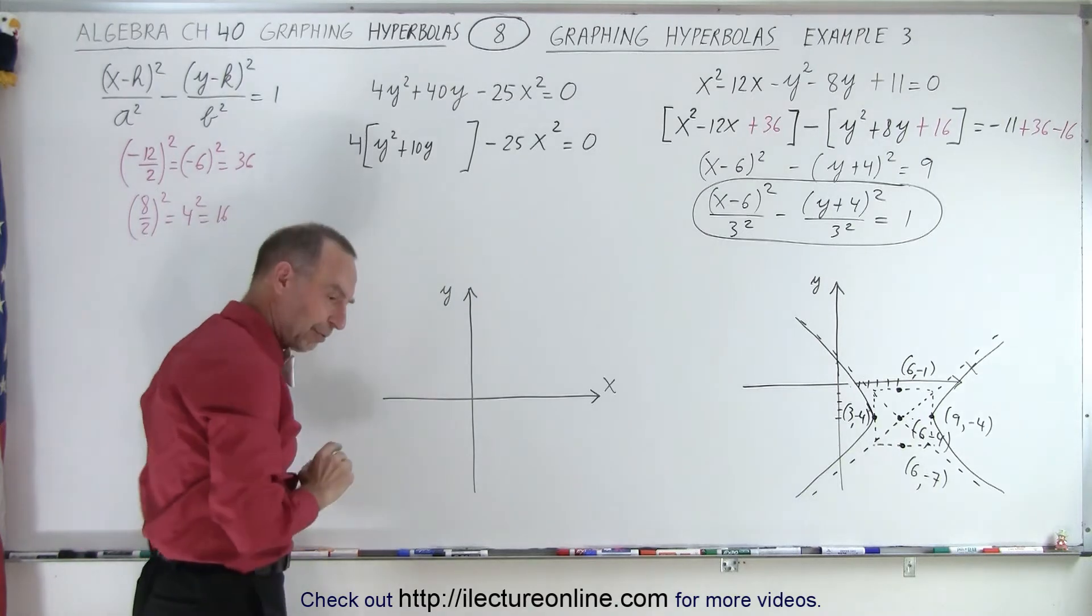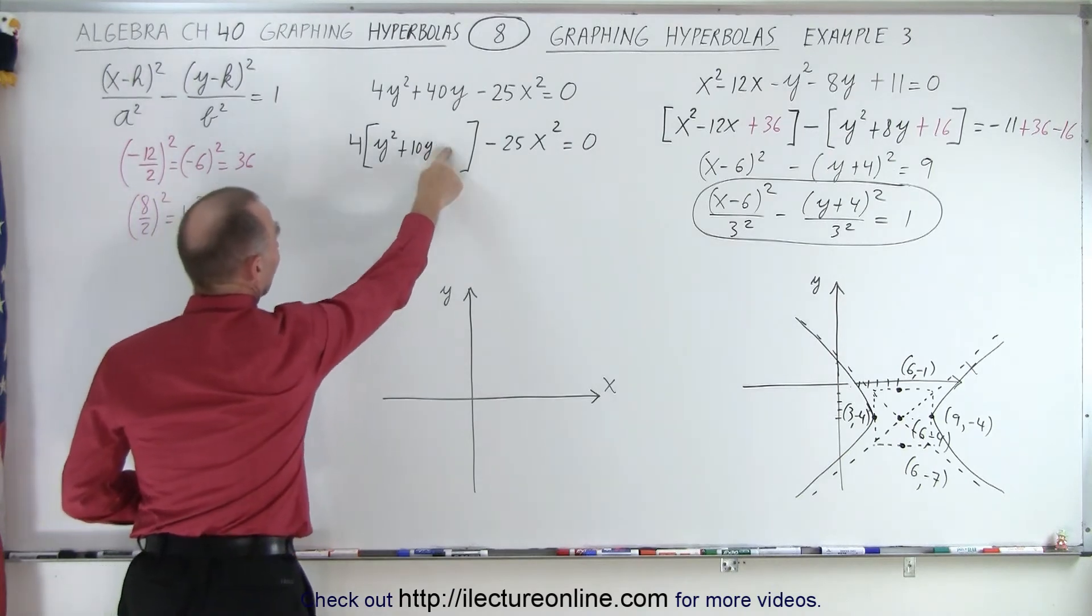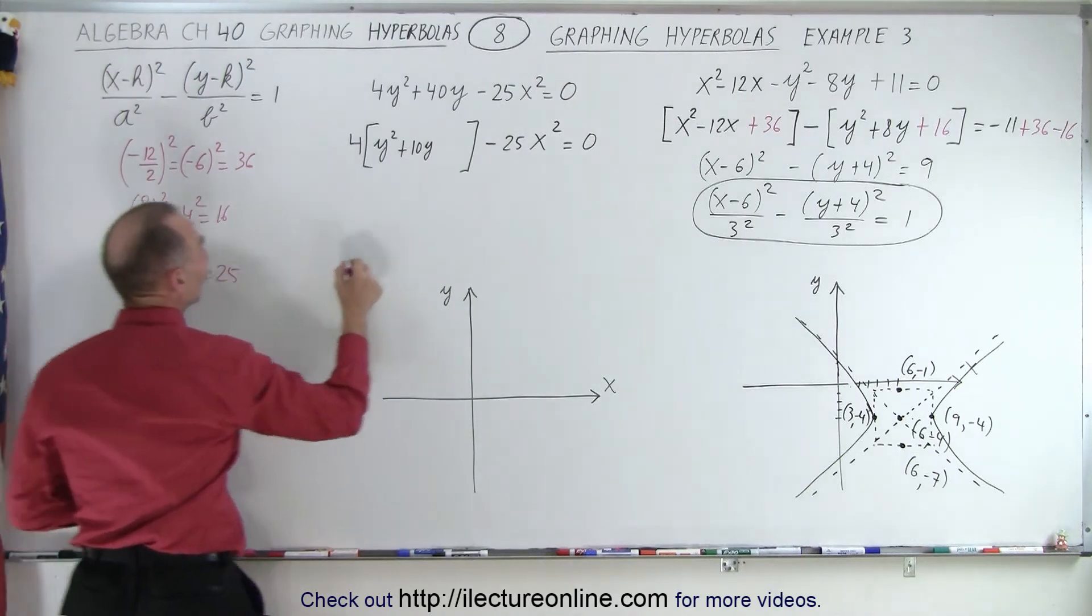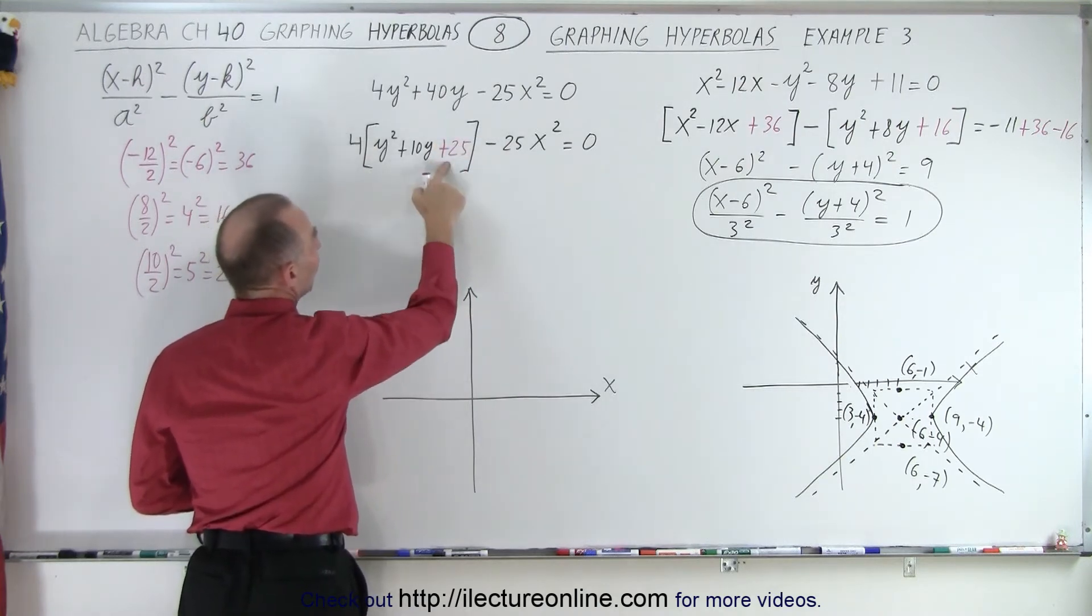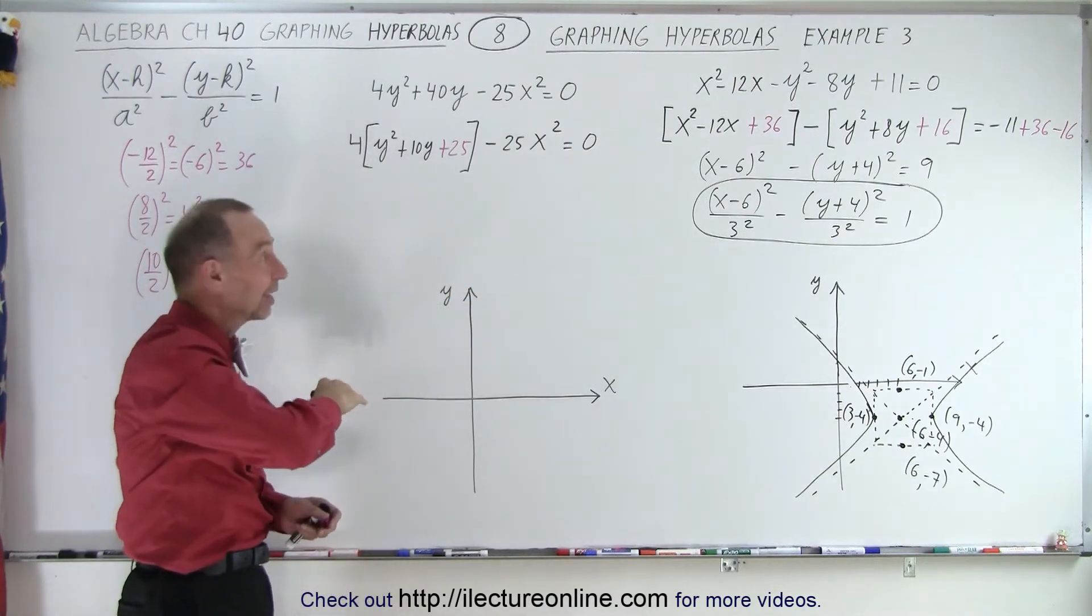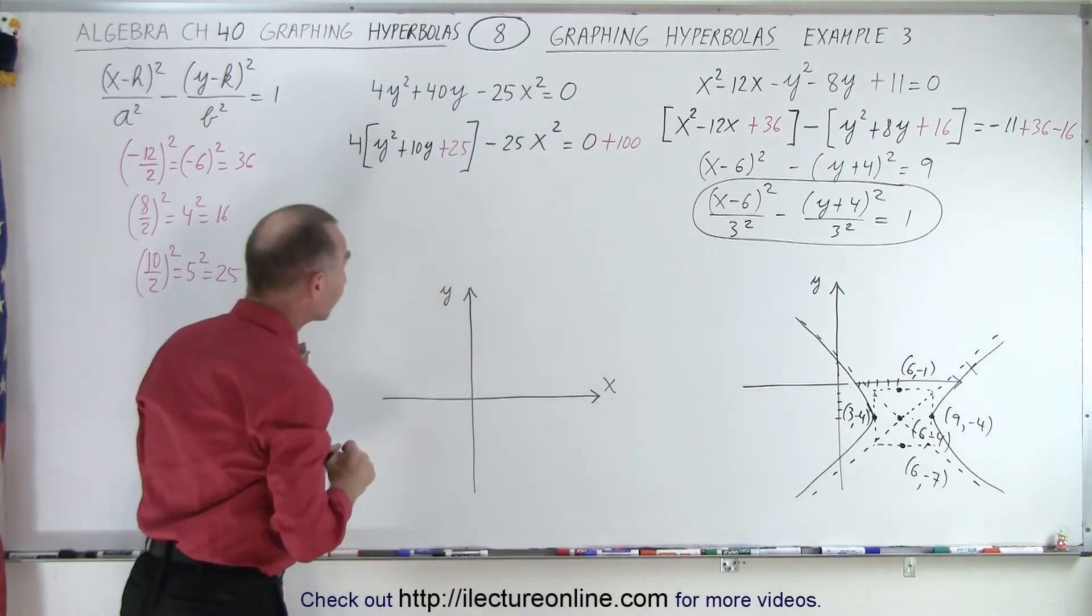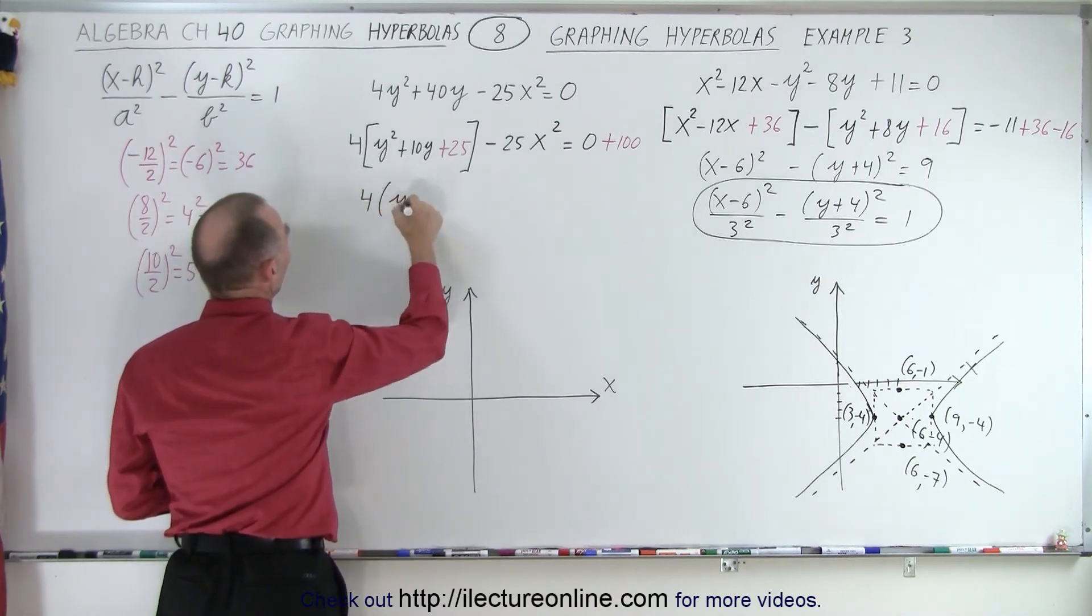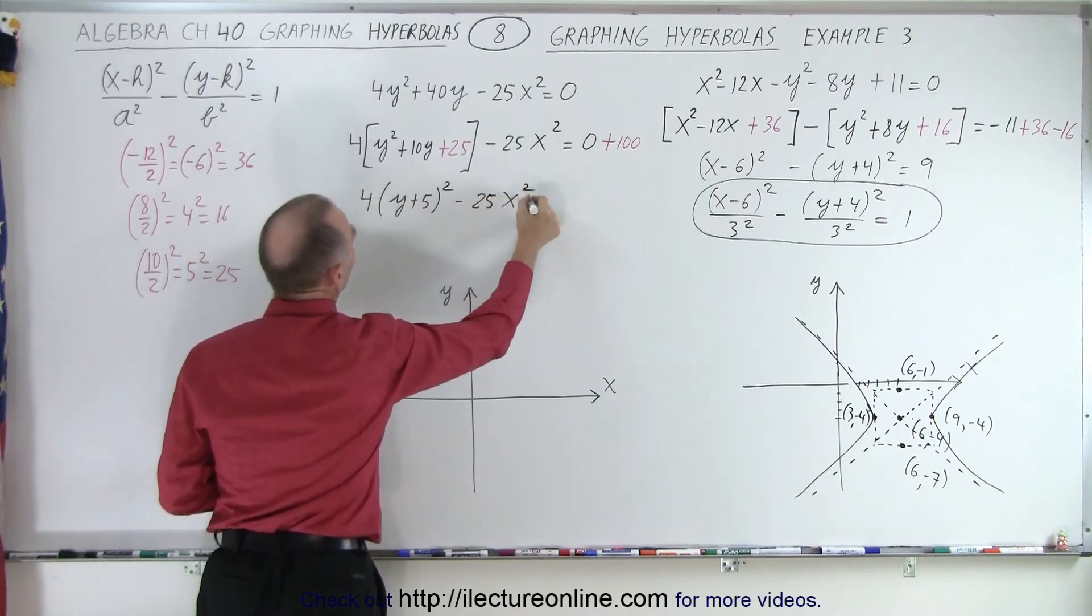So what do we do there? The same as before. We take half the middle term squared and add it to both sides. So that means 10 divided by 2 squared, which is 5 squared, which is 25, which means we need to add 25 here. But notice that 25 is multiplied times 4, so we essentially added 100 on the left side, so we have to add 100 to the right side. 4 times 25.